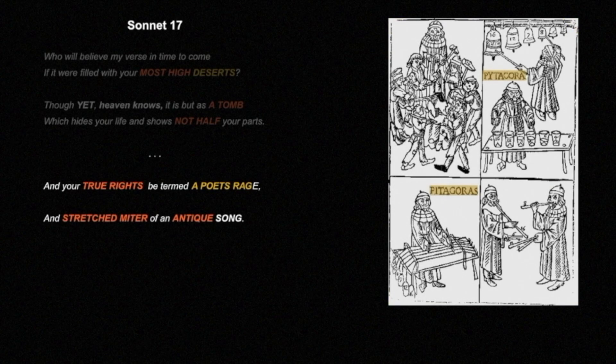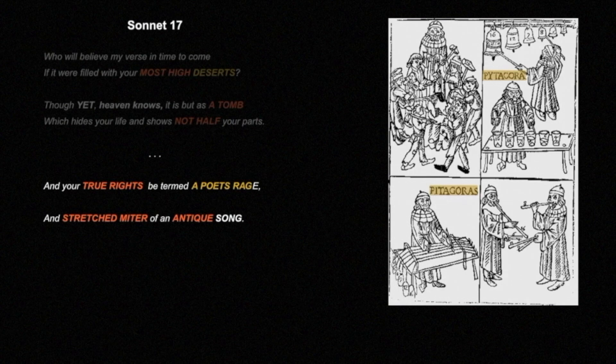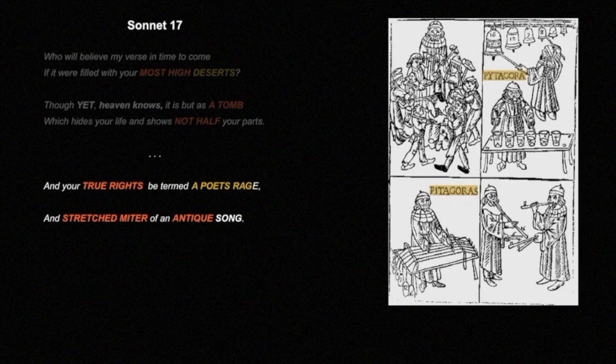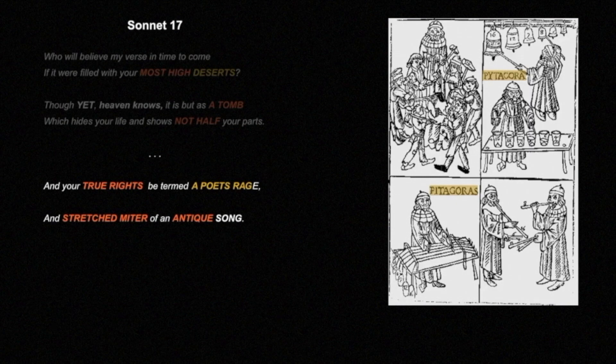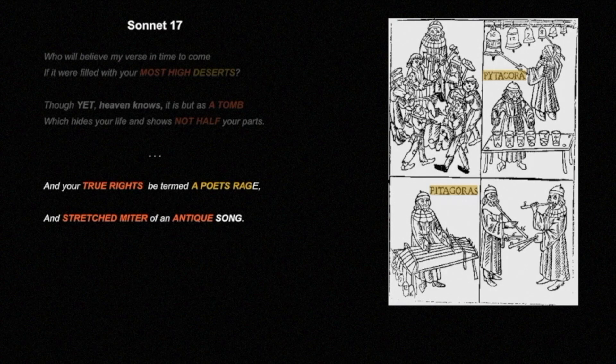And stretchered mitre of an antique song. Now, this is always amended in future versions of the sonnets after the original to stretched mitre. They say the printer made a mistake. No, he didn't make a mistake. This was very deliberate. Mitre. Stretchered alludes to the derivation of the word hypotenuse, the side opposite the right angle of a triangle. It comes from the ancient Greek hypo, meaning under, and teino, meaning I stretch. Stretch under is hypotenuse.